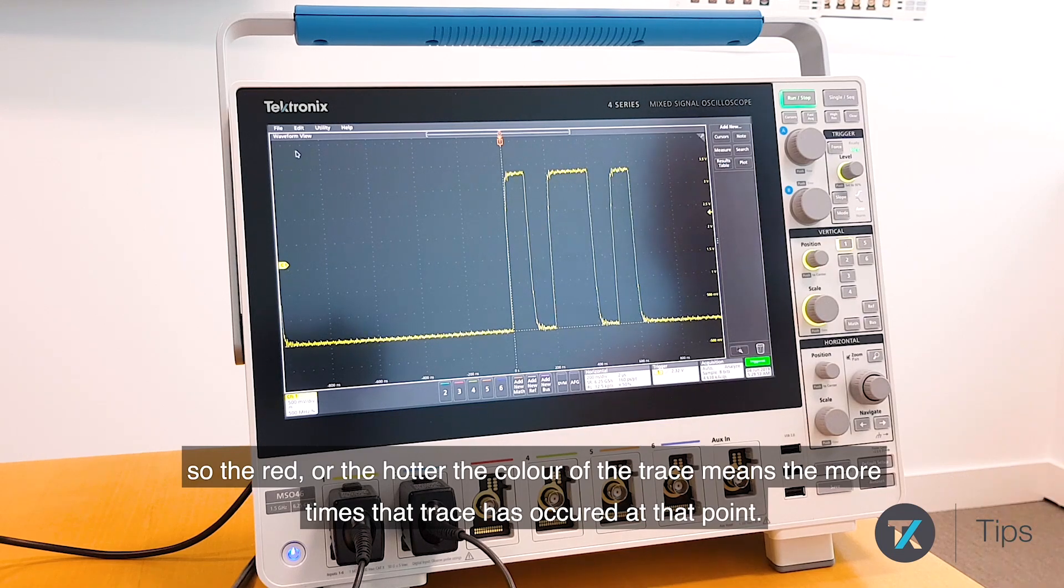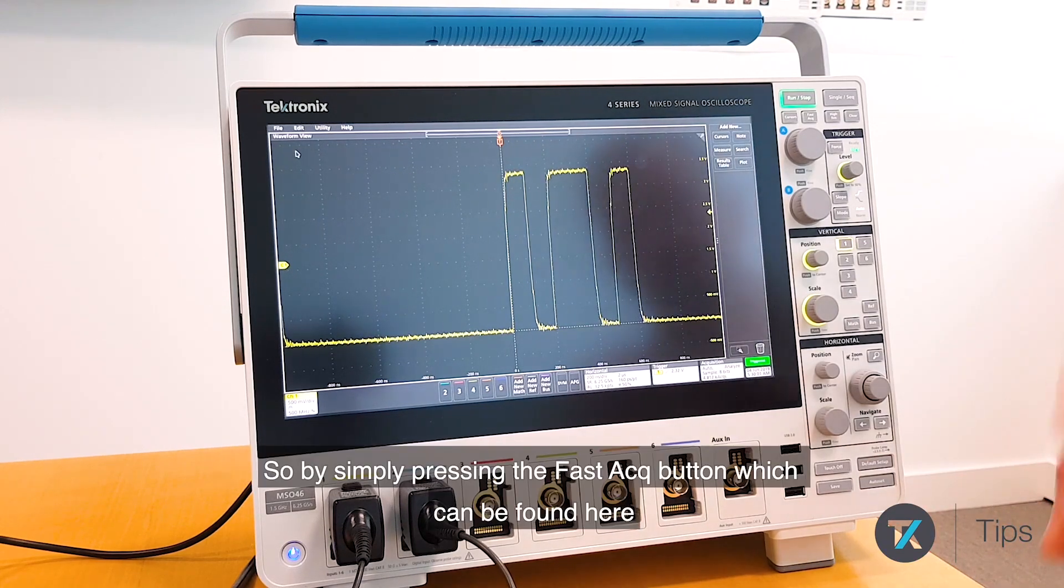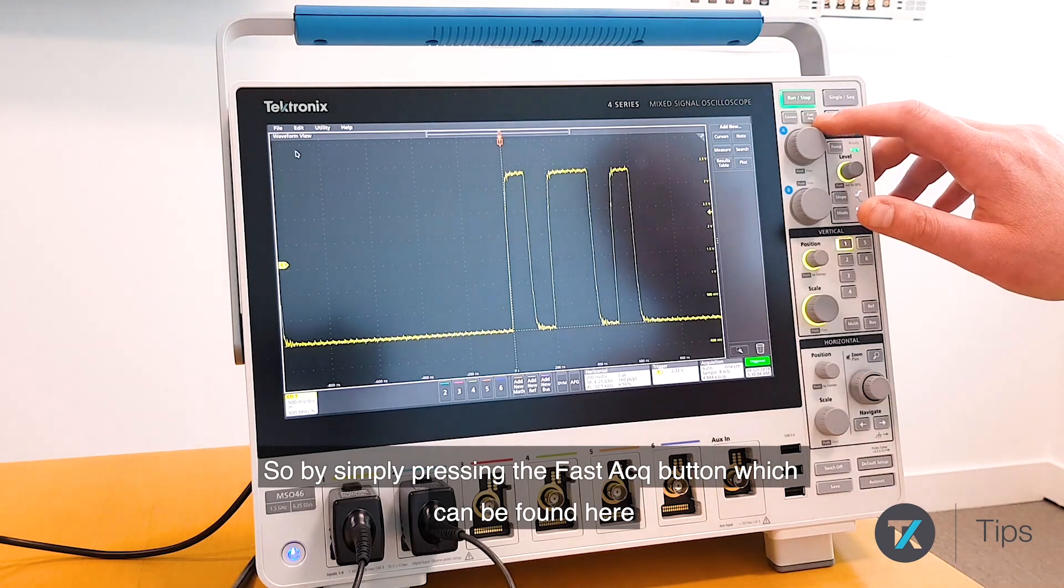The darker or cooler it is means it's occurring a lot less. By simply pressing the Fast Ac button which can be found here, we automatically enter Fast Acquisition mode.